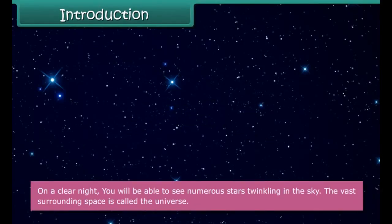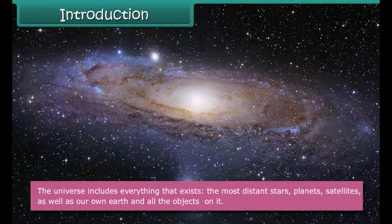On a clear night, you'll be able to see numerous stars twinkling in the sky. The vast surrounding space is called the Universe. The Universe includes everything that exists — the most distant stars, planets, satellites, as well as our own Earth and all the objects on it.